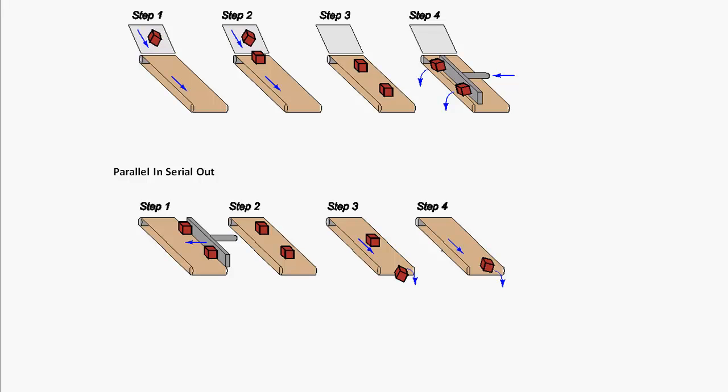We'll also add a fourth type: parallel-in, parallel-out, where a bunch of bits come in and then a bunch of bits go out. We'll see how to implement all of these using flip-flops.